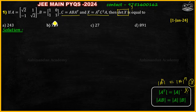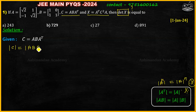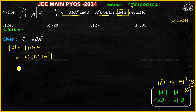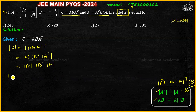What is given? C equals ABA transpose. So, taking the determinant of C: determinant of ABA transpose. Using the second property, this equals determinant of A into determinant of B into determinant of A transpose. Since determinant of A transpose equals determinant of A, we conclude that determinant of C equals determinant of A squared into determinant of B.